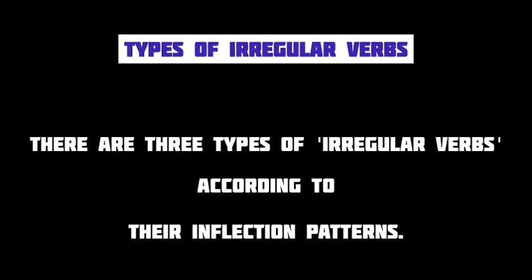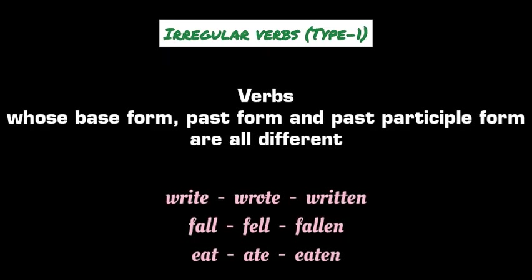There are three types of irregular verbs in English grammar. The first type consists of irregular verbs whose base form, past form, and past participle form are all different. For example, 'write' becomes 'wrote' in simple past and 'written' in past participle. 'Fall' inflects as 'fell' in simple past and 'fallen' in past participle. The verb 'eat' is inflected as 'ate' in simple past and 'eaten' in past participle form.